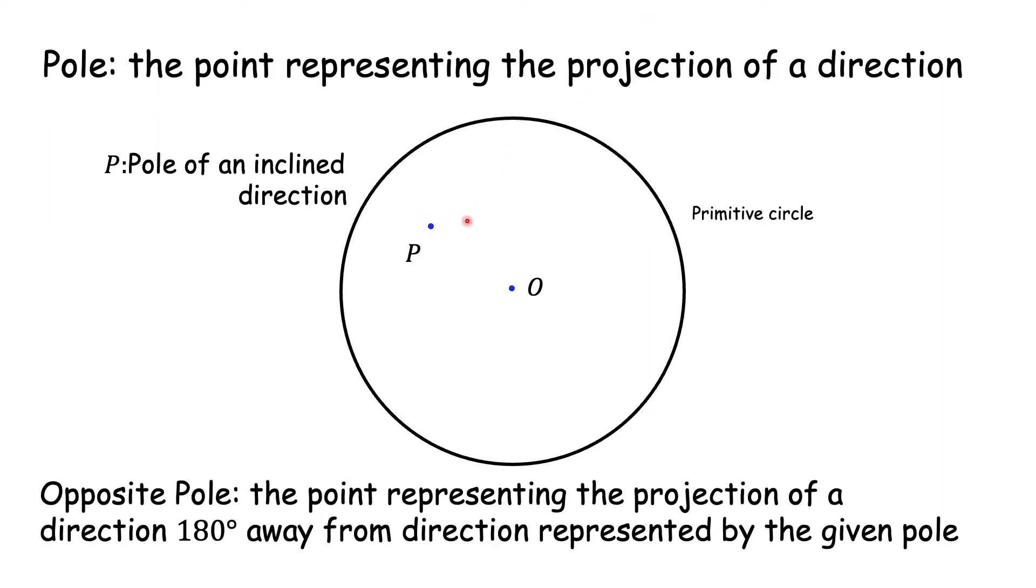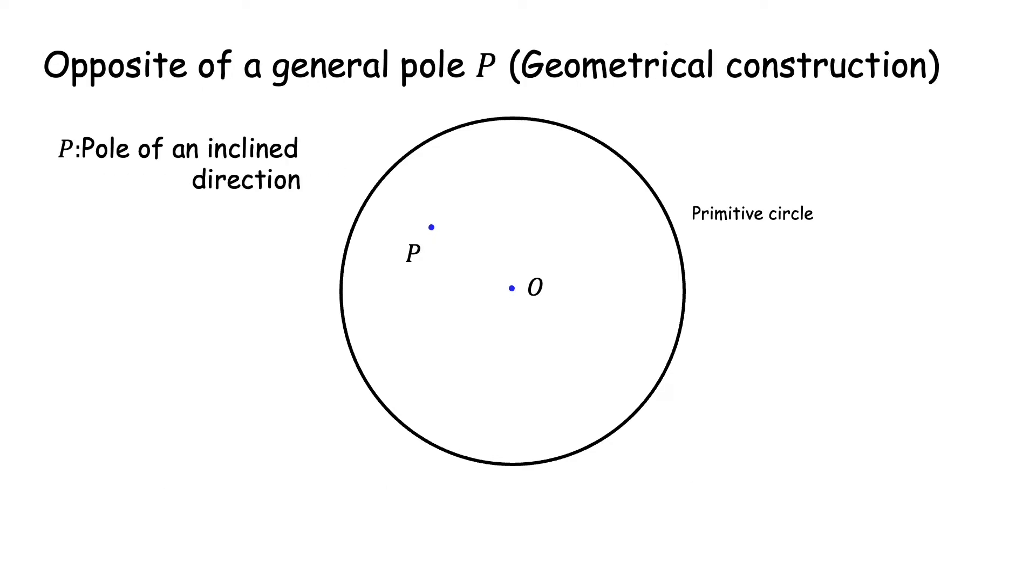Here this pole is representing a direction. We want to find out where will a direction 180 degrees away from this direction project. What is its opposite pole? Let us try to find that.